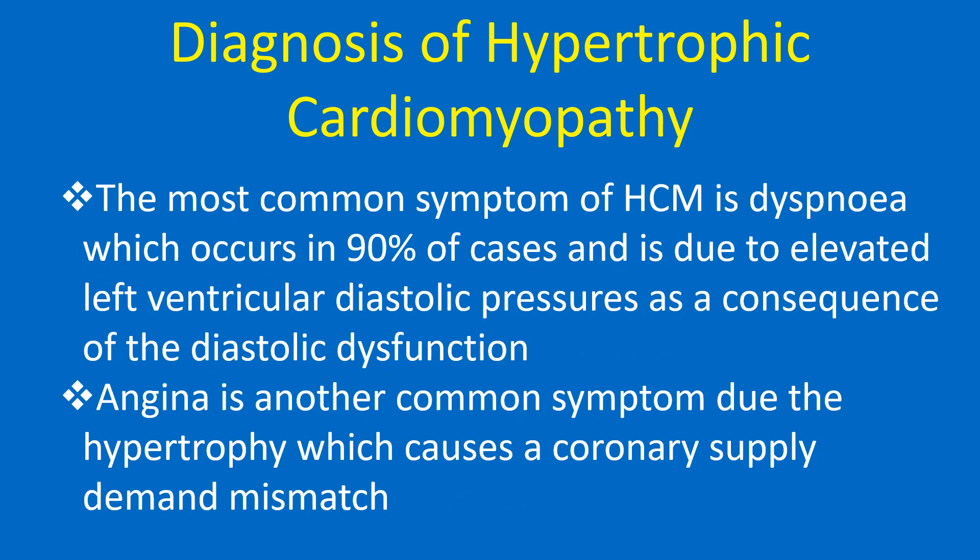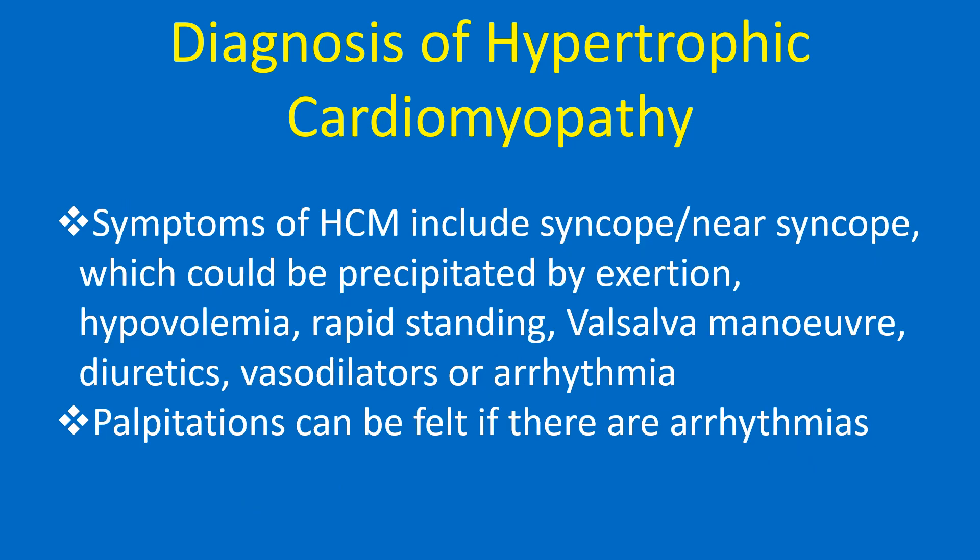The most common symptom of hypertrophic cardiomyopathy is dyspnea, which occurs in 90% of cases, and is due to elevated left ventricular diastolic pressures as a consequence of diastolic dysfunction. Angina is another common symptom due to the hypertrophy which causes a coronary supply-demand mismatch. Symptoms of HCM also include syncope or near-syncope, which could be precipitated by exertion, hypovolemia,